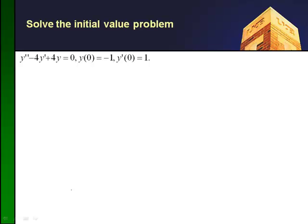Okay, let's solve the initial value problem: y double prime minus 4y prime plus 4y equals 0, subject to y of 0 equals negative 1 and y prime of 0 equals 1.